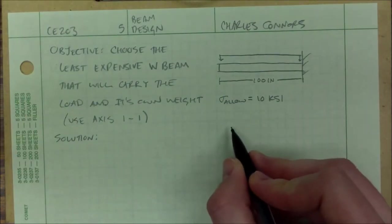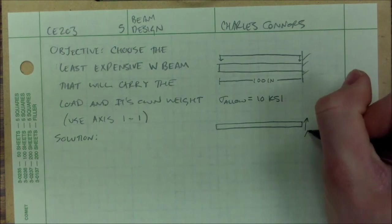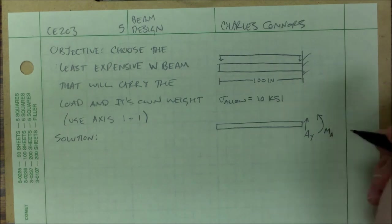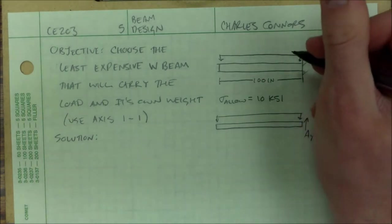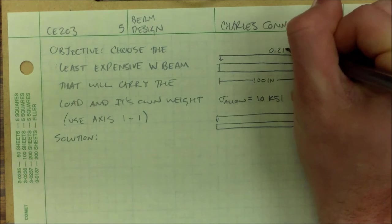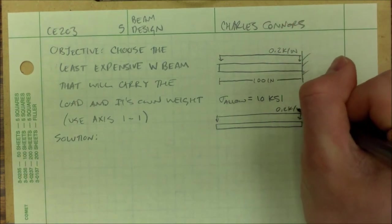Alright, first thing I always like to do is draw my free body diagram. Oh, this is supposed to be 0.2 kip per inch. 0.2 kip per inch.